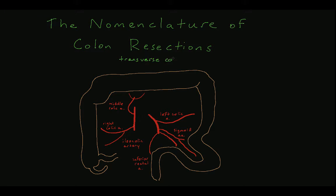A transverse colectomy requires ligation of the middle colic artery, allowing for just the transverse colon to be resected. In practice, this operation is usually avoided because the subsequent reanastomosis requires mobilization of both the hepatic and the splenic flexures of the colon, and because this configuration of bowel results in a tenuous blood supply without any named artery directly supplying the region of the anastomosis. Both of these features place the anastomosis at a higher risk of leak, which is why the operation is rarely performed.